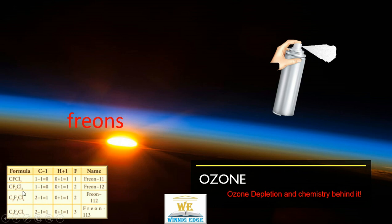No hydrogen, so 0 plus 1; only 1 carbon, 1 minus 1; and 2 fluoro atoms — giving Freon 12. We have the next compound C2F2Cl4: 2 minus 1, 0 plus 1, fluorine 2 — Freon 112. Similarly, C2F3Cl4: F3 is 3, carbon 2 minus 1, 0 plus 1 — it will be Freon 113.